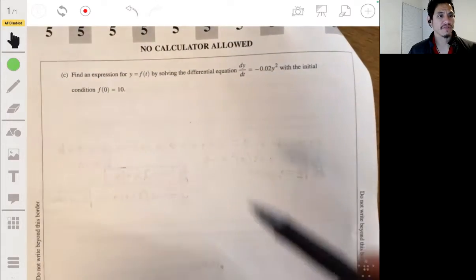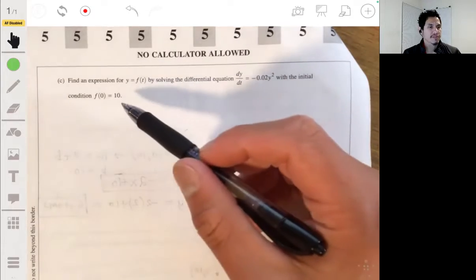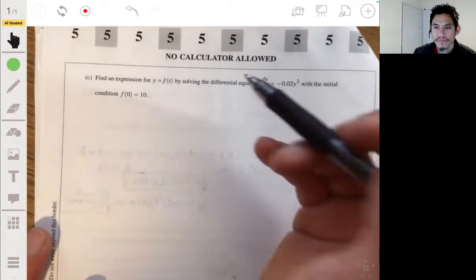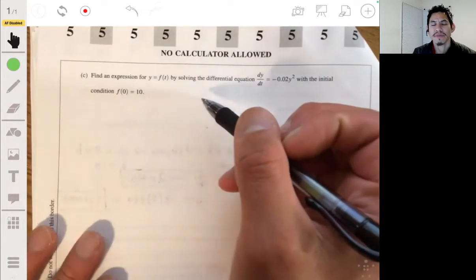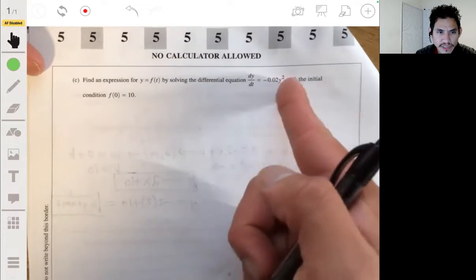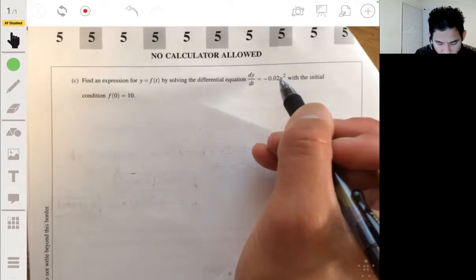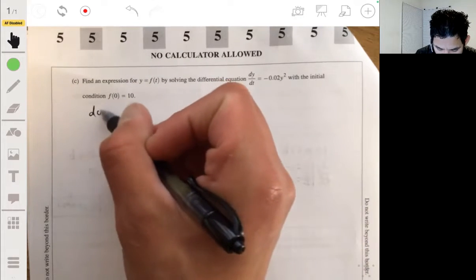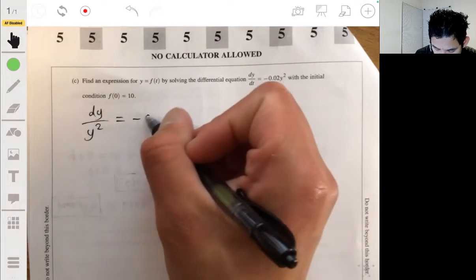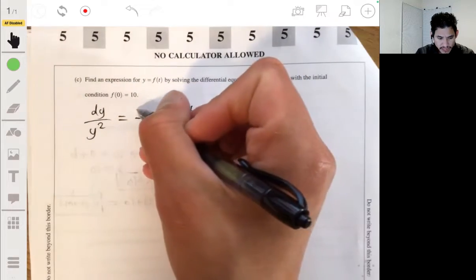Part C. Find an expression for y equals f of t by solving the differential equation dy dt equals negative 0.02y squared with the initial condition f of 0 equals 10. This is where we've got to use our separation of variables. So bring the y's to the left and the t's to the right. So divide by y squared. dy over y squared. Multiplying the right by dt, we get negative 0.02 dt.